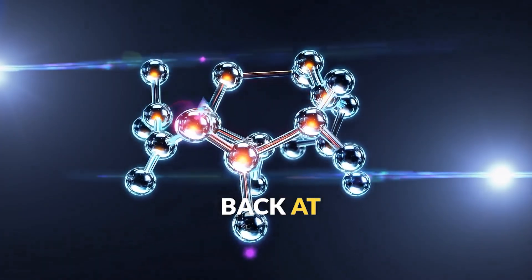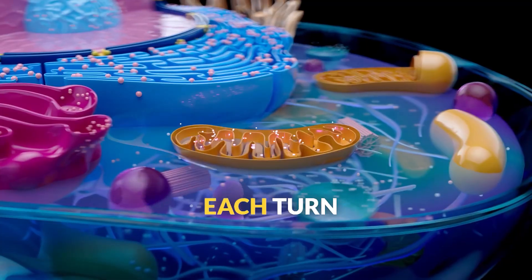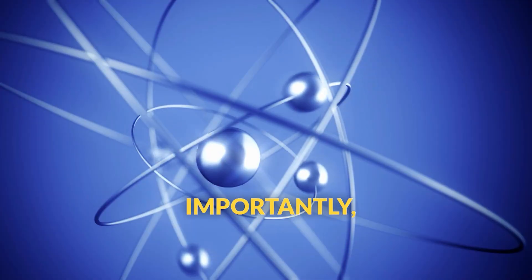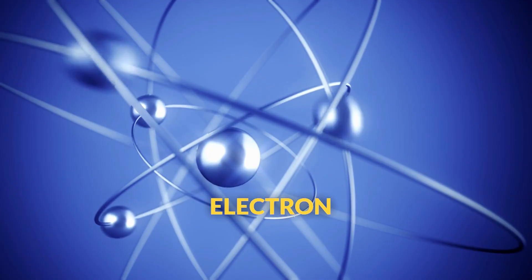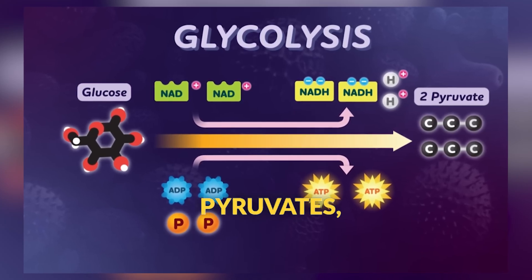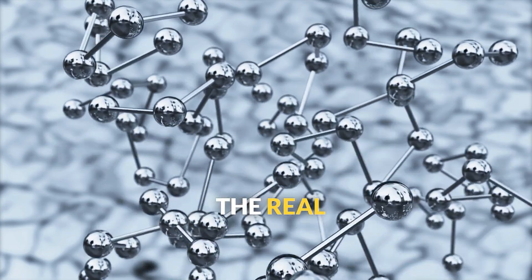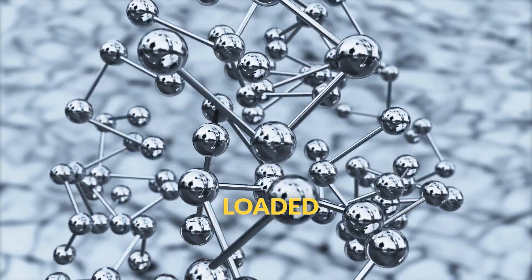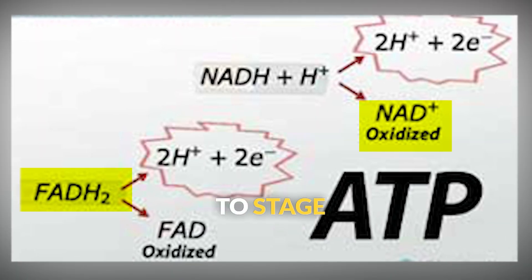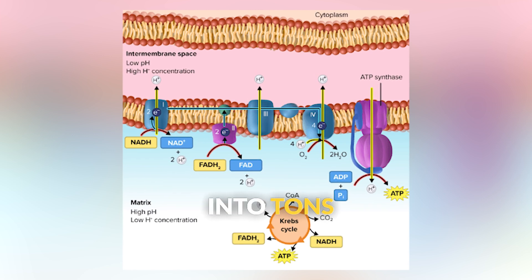By the end, we're back at oxaloacetate, ready to start the cycle all over again. Each turn of the Krebs cycle produces some ATP directly, but more importantly, it loads up electron carriers with energy. Since each glucose produces 2 pyruvates, the Krebs cycle turns twice per glucose molecule. The real payoff comes next — all these loaded electron carriers, the NADH and FADH2, head to stage 3, where their stored energy gets converted into tons of ATP.